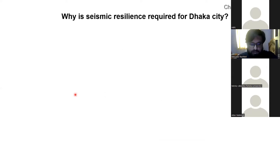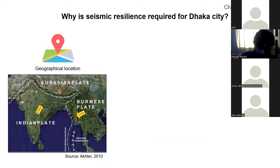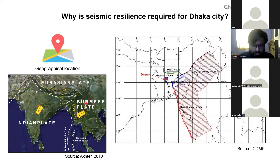So why is Seismic Resilience required for Dhaka City? The geographical location of Bangladesh is very crucial. It sits at the junction of three active tectonic plates. In the north we have the Eurasian plate, in the west we have the Indian plate, and in the eastern part we have the Burmese micro plate. Dhaka is surrounded by three different faults: the Modukur fault, Dawki fault, and the plate boundary fault. As a result, geographically Dhaka is very vulnerable to seismic hazard.